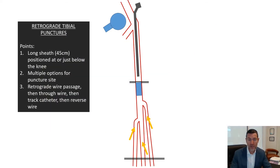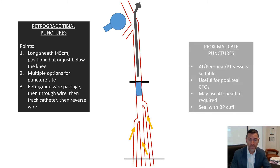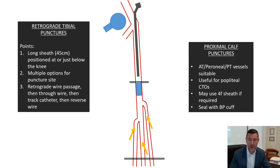Proximal calf artery punctures are really useful for popliteal CTOs. It's helpful to have a long sheath as close to the CTO as possible from above. A 4Fr sheath can be used if the calibre of the tibial artery is sufficient, and these can easily be sealed at the end of the case with a blood pressure cuff inflated for 20 minutes.